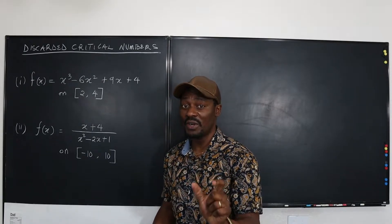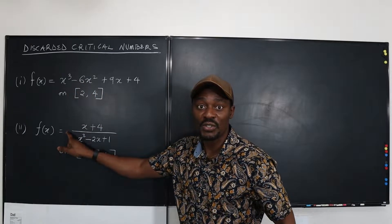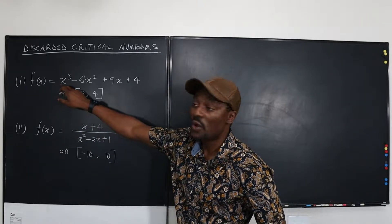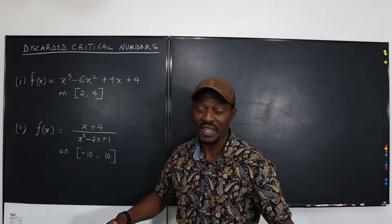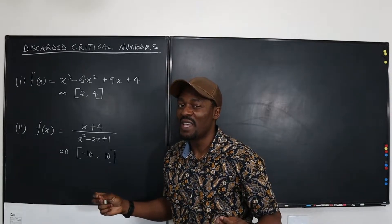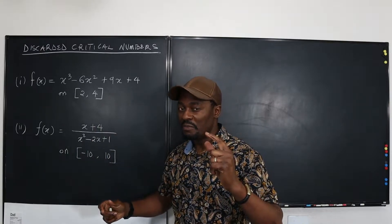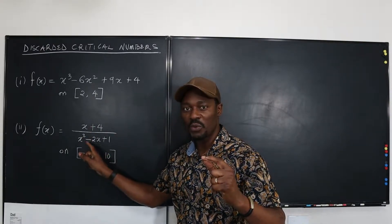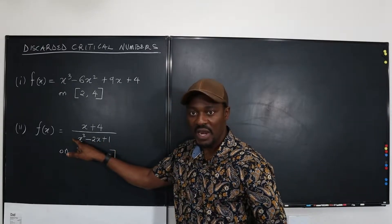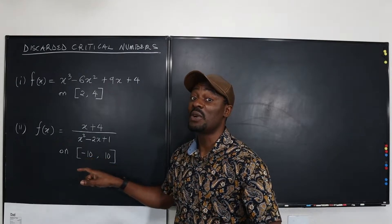The first condition is that whatever critical number you get must be in the domain of the function you're given. If you're given a polynomial, the domain is from negative infinity to positive infinity, so whatever real number you get will always work. But for a rational function, it will not always work — whatever number makes the denominator zero cannot be in the domain and therefore cannot be a critical number.